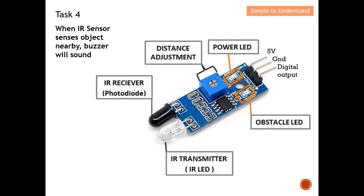This shows the IR sensor and all the key parts are already labelled. We have the IR transmitter and the IR receiver — the IR receiver is made of a photodiode. We have a distance adjustment, so we can use a screwdriver to turn the knob to adjust the detection distance between the IR transmitter and receiver. Next, the power LED simply indicates whether this IR sensor is turned on or off — when it's on, the green LED will light up.